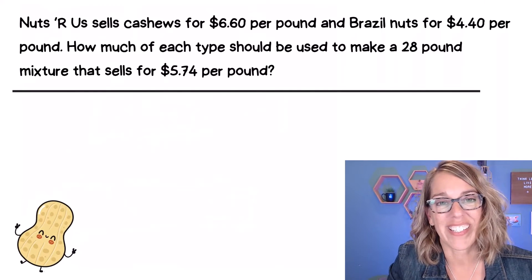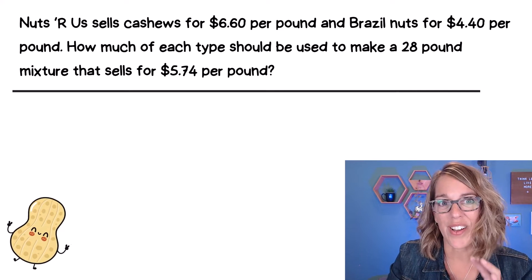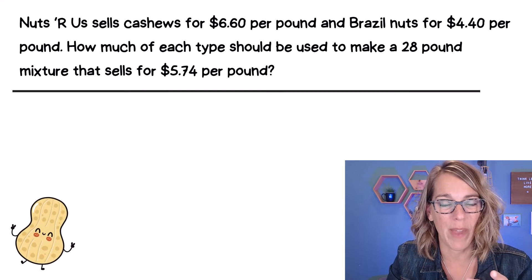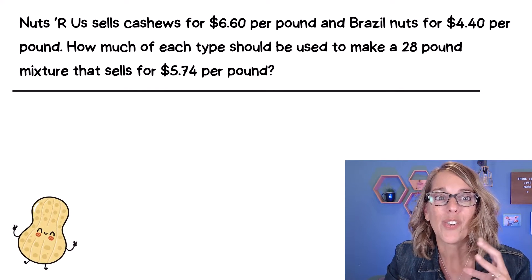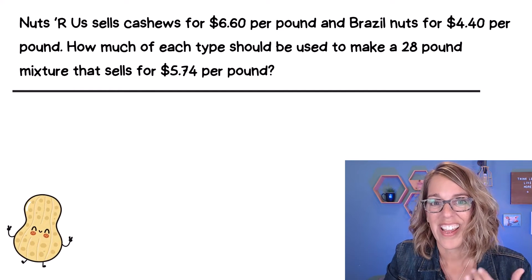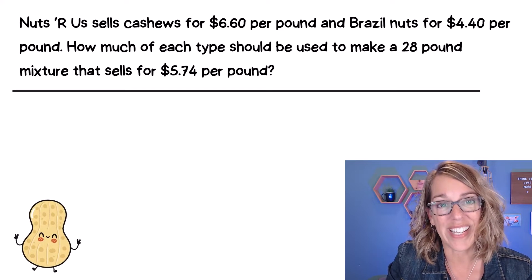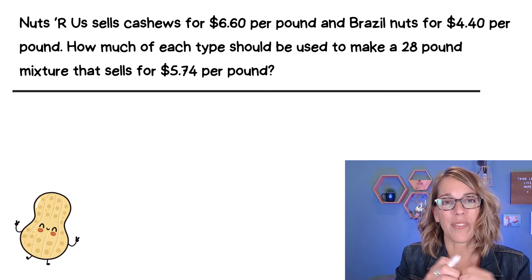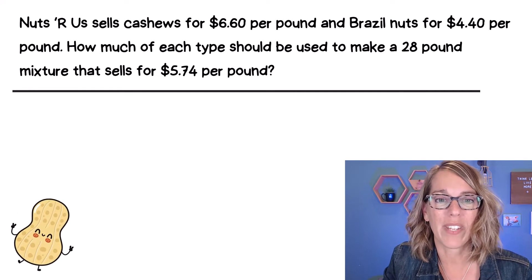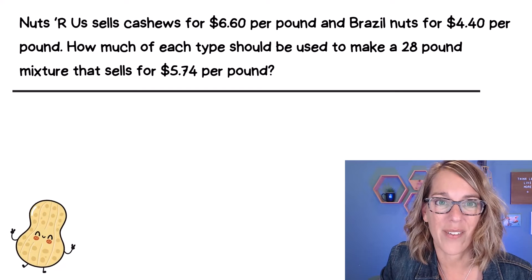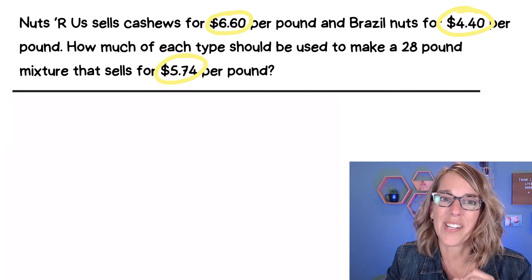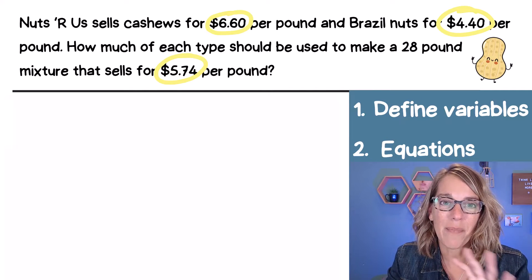And the nuts this time, instead of having a percent content, they have a value 660 per pound, or that would be times pound. One pound would be 660. Two pounds would be double that, which would be 1320 and so on. And then the Brazil nuts are 440 a pound. We're going to mix those together and come up with a mixture that is 574. So a dollar amount in the middle, and we're going to come up with 28 pounds. Even though this one has dollars instead of percentages, I'm still going to end up doing it the same way.